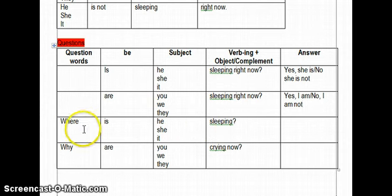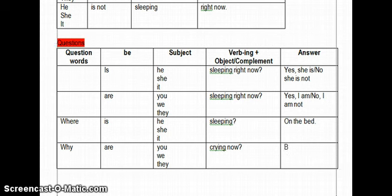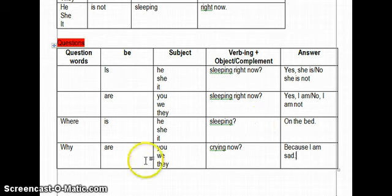For information questions in present progressive, use a question word, then the to be verb, then the subject, then verb-ing. For example: 'Where is he sleeping?' — the answer would be 'on the bed.' 'Why are you crying now?' — the answer might be 'because I am sad.' Remember, the use of to be is adjusted to match the subject — this pattern applies consistently to statements, negatives, and questions.